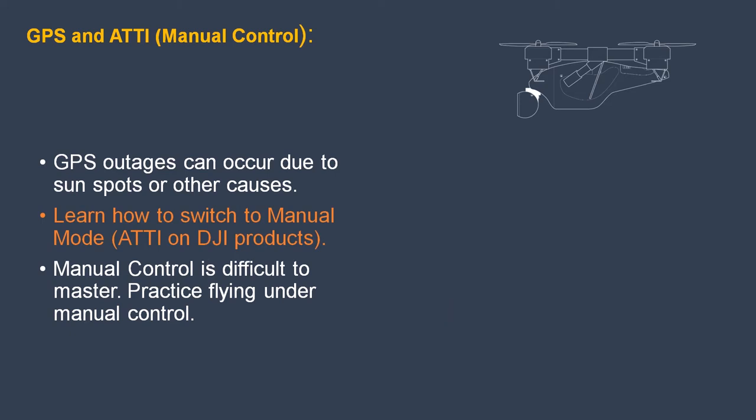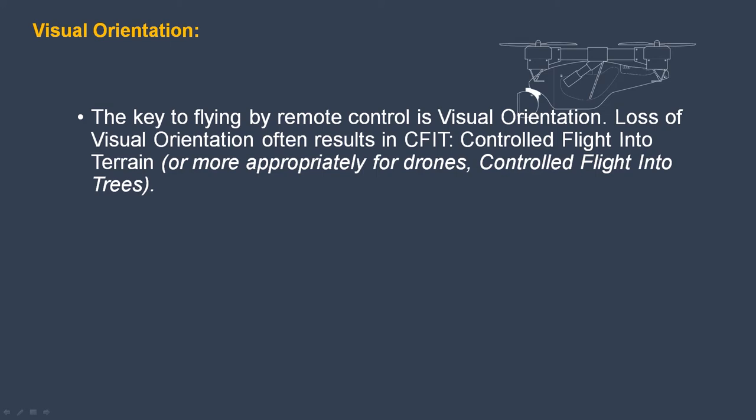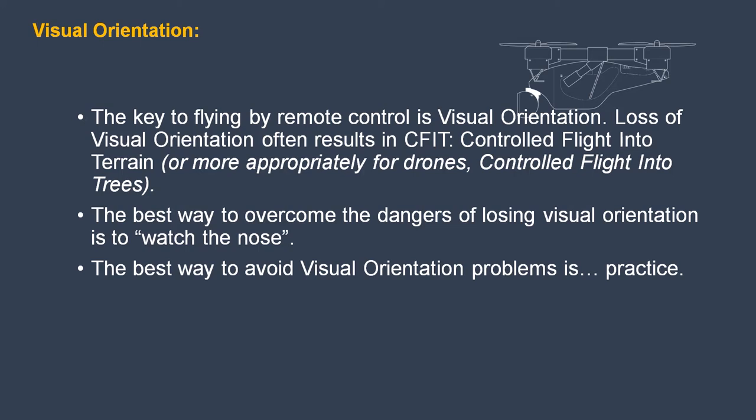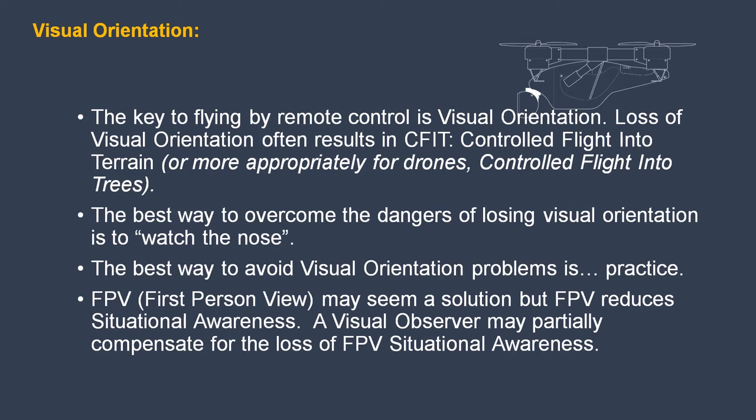Learn to switch to manual mode — manual control is difficult to master, so practice flying under manual control. The key to flying by remote control is visual orientation. Loss of visual orientation often results in CFIT — controlled flight into terrain — or more appropriately for drones, controlled flight into trees. Visual orientation is a specific kind of situational awareness. The best way to overcome the dangers of losing visual orientation is to watch the nose. The best way to avoid visual orientation problems is practice.